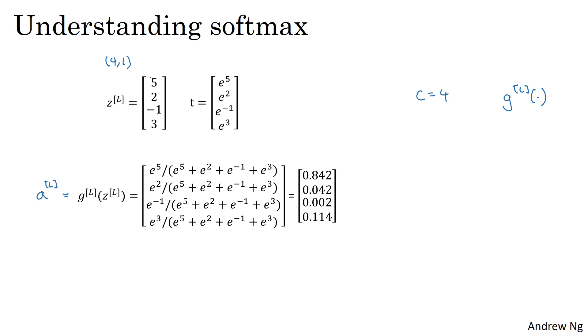So you notice that in the Z vector, the biggest element was five and the biggest probability ends up being this first probability. The name softmax comes from contrasting it to what's called a hardmax, which would have taken the vector Z and mapped it to this vector. So the hardmax function will look at the elements of Z and just put a one in the position of the biggest element of Z and then zeroes everywhere else. And so this is a very hardmax where the biggest element gets the output of one and everything else gets the output of zero.